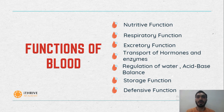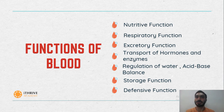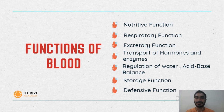Excretory function: all the metabolic waste produced after metabolic activities in the cell is removed by the blood. Blood carries these excretory substances towards the excretory organs like the liver, kidney, skin, etc., ultimately helping in the removal of these products from the body.